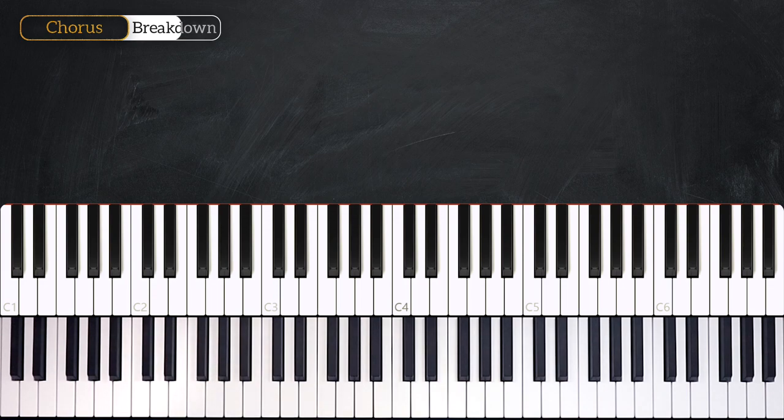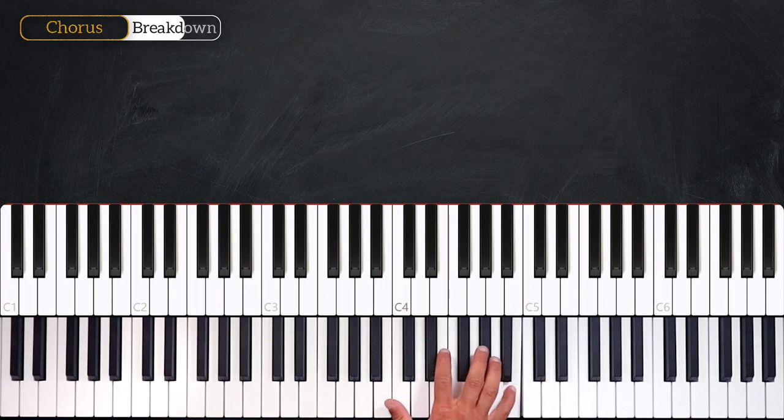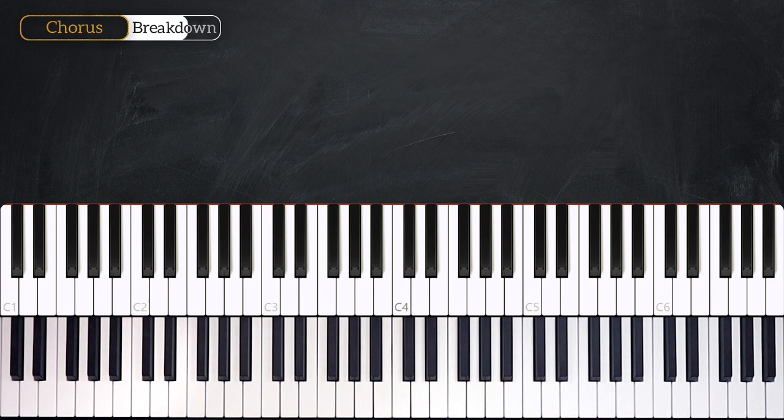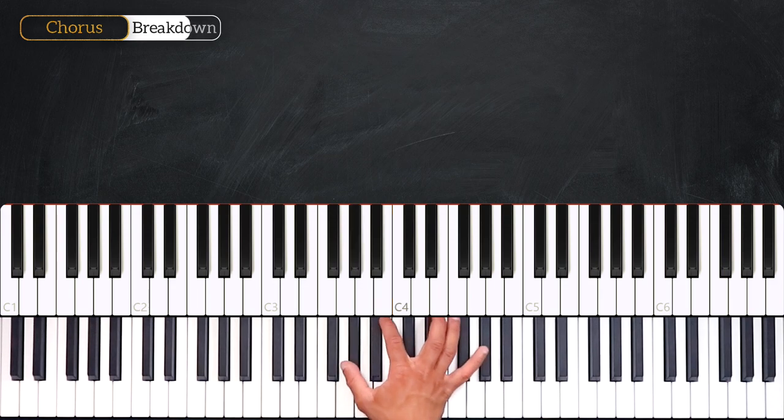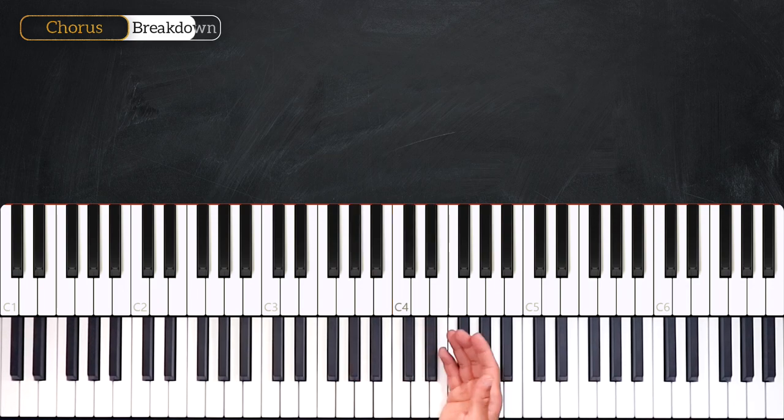Good job! Now let's see the right hand. So we start by playing D-sharp B C-sharp B G-sharp G-sharp. Then we play this chord, so B D-sharp and G-sharp. So it goes just like this. Together, together 3-4, together 3-4.